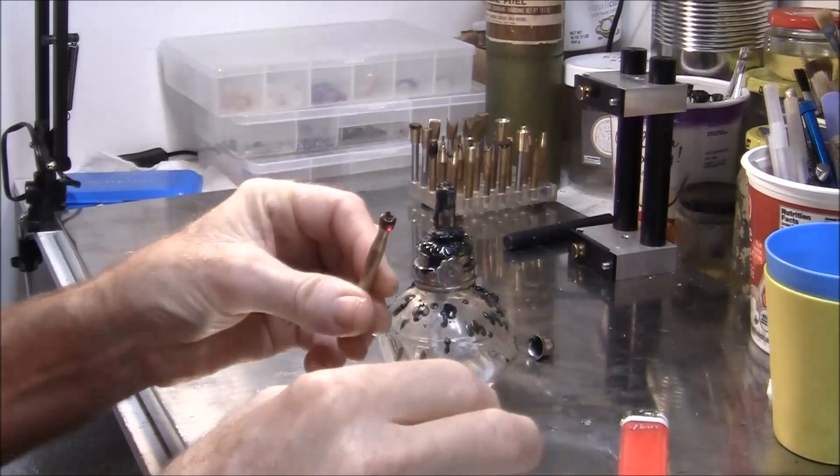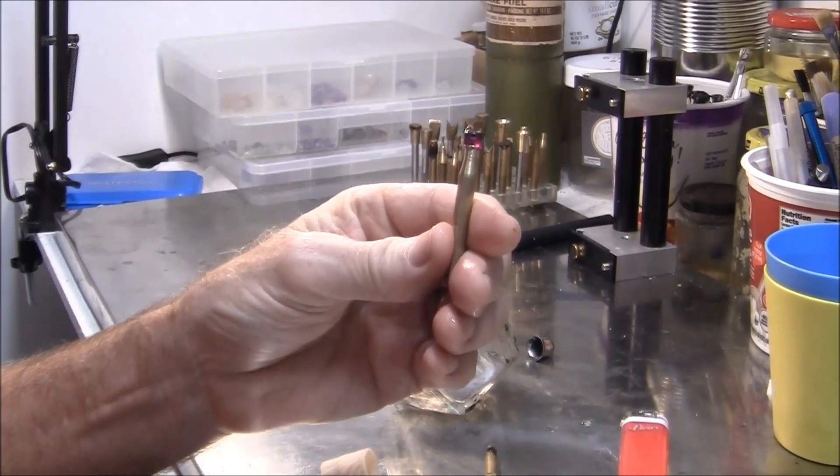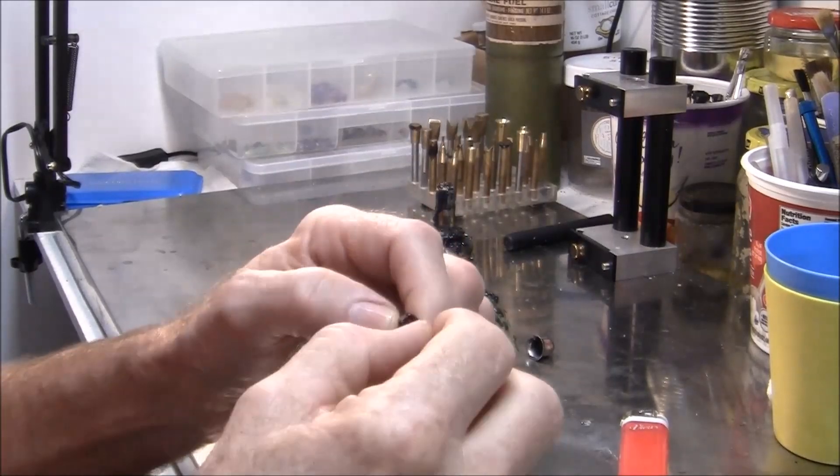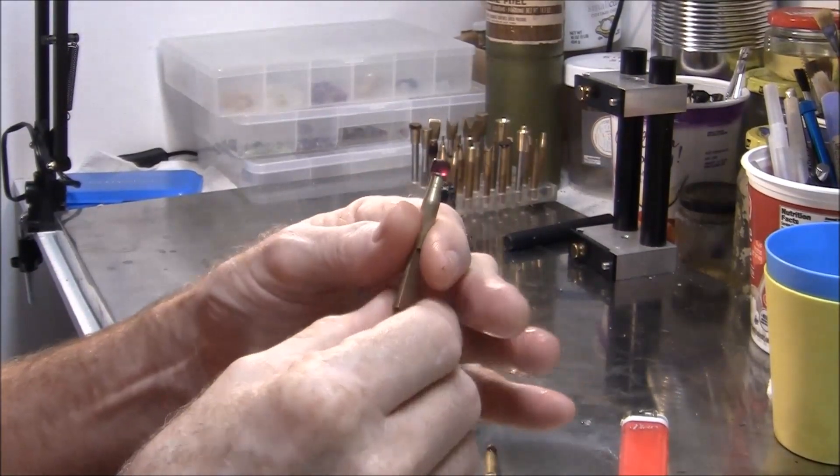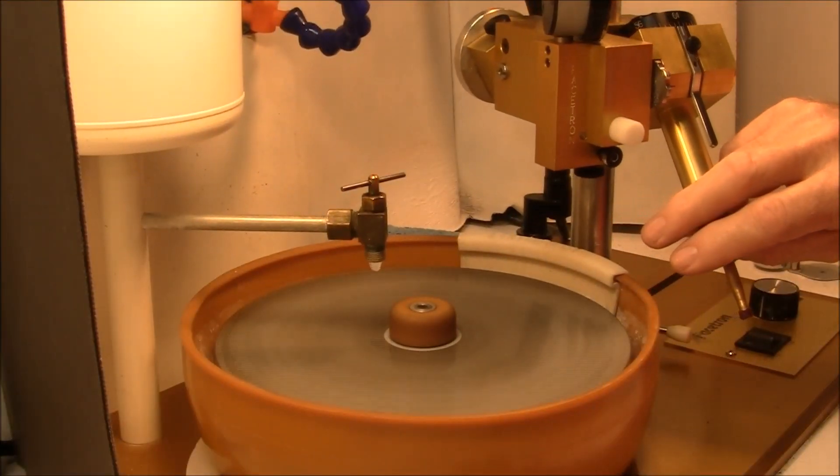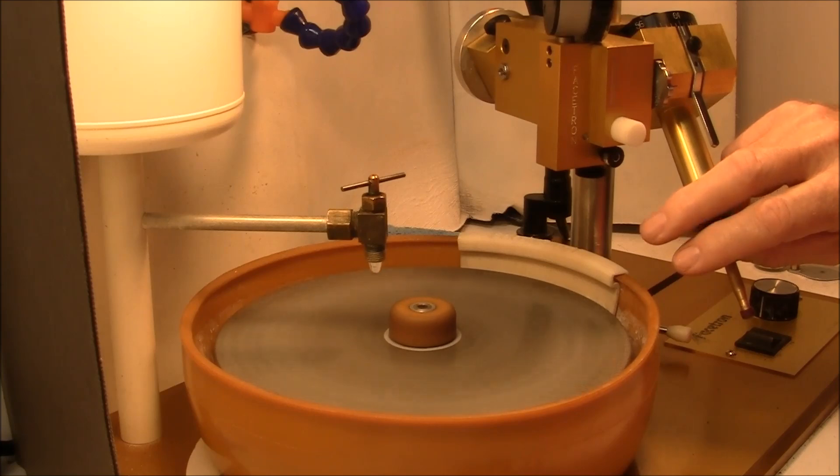And I'll do one more. There we have it. The stone is ready. I'll just take off some of the wax and be ready to start cutting the crown here. I'm starting to cut the crown main facets at 36 degrees.